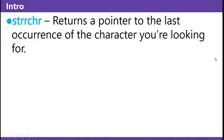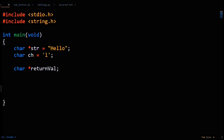Strrchr, aside from being very fun to say, returns a pointer to the last occurrence of the character you're looking for. This is set up for using strrchr: a string 'hello', a character 'l', and setting up a pointer to a character for the return value. Then you do return_val equals strrchr, and pass in the string 'hello' and the character 'l'.